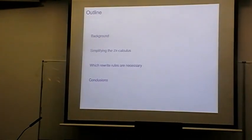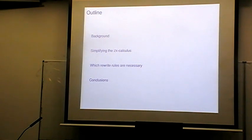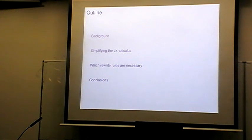The idea of this talk is I'll first give some background on the ZX calculus and stabilizer quantum mechanics. Then I'll move towards this minimal result from two directions. On one side, we're simplifying the calculus by removing all rules where we can show they're derivable from the others. On the other hand, we show which rules we certainly can't remove. The two processes don't quite meet in the middle, but I'm going to get to that.